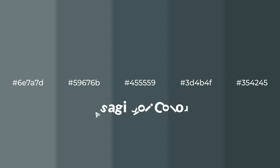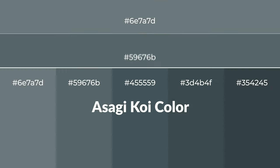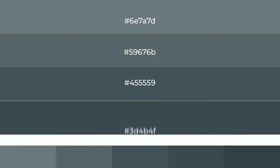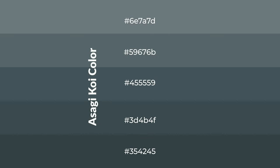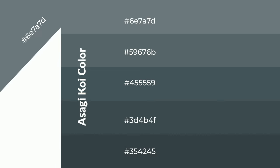Cool shades of asagi koi color with blue hue for your next project. To generate tints of a color, we add white to the color. Tints create light and exquisite emotions. To generate shades of a color, we add black to the color. Shades are used in patterns, 3D effects, and layers, and they create depth and drama.